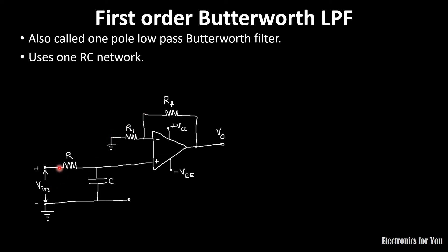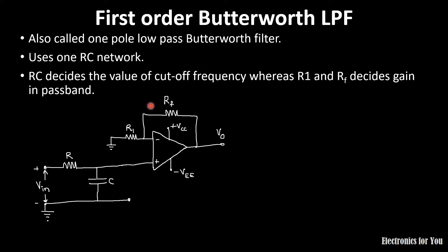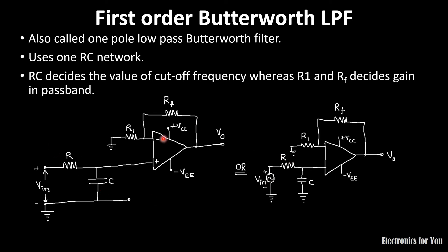The value of cutoff frequency will be decided by the R and C network, whereas the passband gain will be decided by the feedback resistance RF and input resistance R1. This circuit can also be drawn like this — both circuits are the same. Here the input and its ground are indicated, while the capacitor is indicated by a separate ground network.